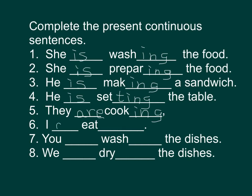I 是跟 am 的，eat 加 -ing 就是现在进行式 — eating。I am eating — 我在吃东西。You 是跟 are 的，wash 加 -ing 就是进行式 — washing。You are washing the dishes — 你在这里清洗碗碟。